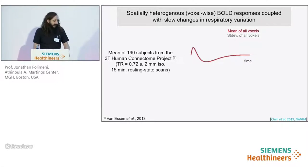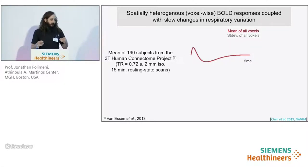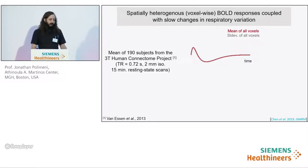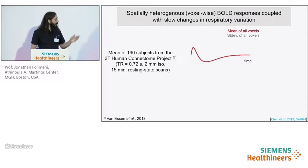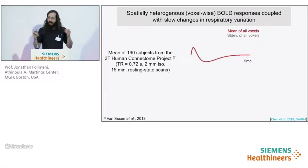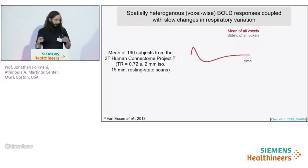To test this, we deconvolved externally recorded slow physiological changes from resting state BOLD at every voxel. We leveraged the large number of subjects provided by the Human Connectome Project dataset — 190 subjects acquired at 3 Tesla — after correcting for instantaneous physiological noise using RETROICOR.